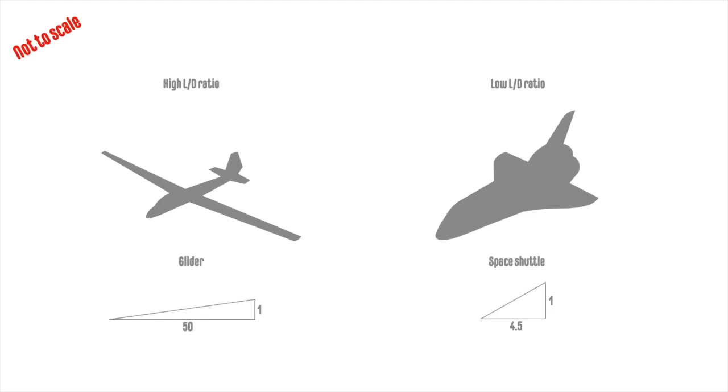If you compare the glider to the space shuttle, you can see that aerodynamically, the glider is a lot more streamlined and has much longer wingspan. We'll discuss these aerodynamic factors in another video. You can see, however, that the space shuttle's low lift to drag ratio gives it a much steeper angle of descent and lower glide range.